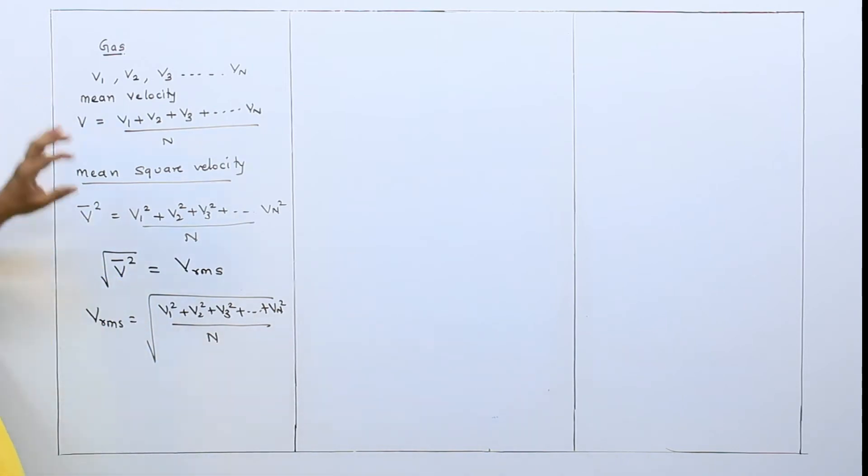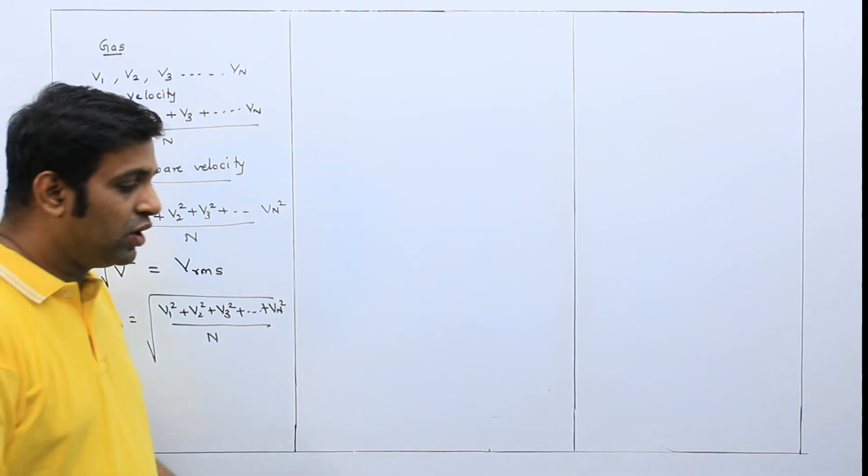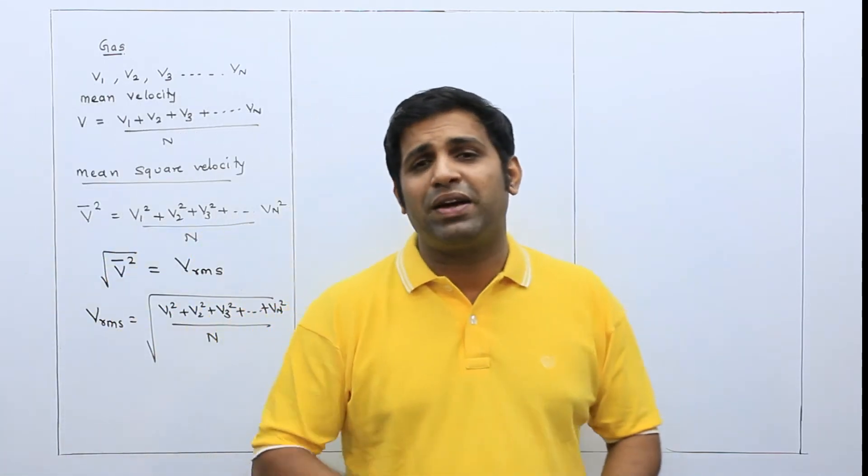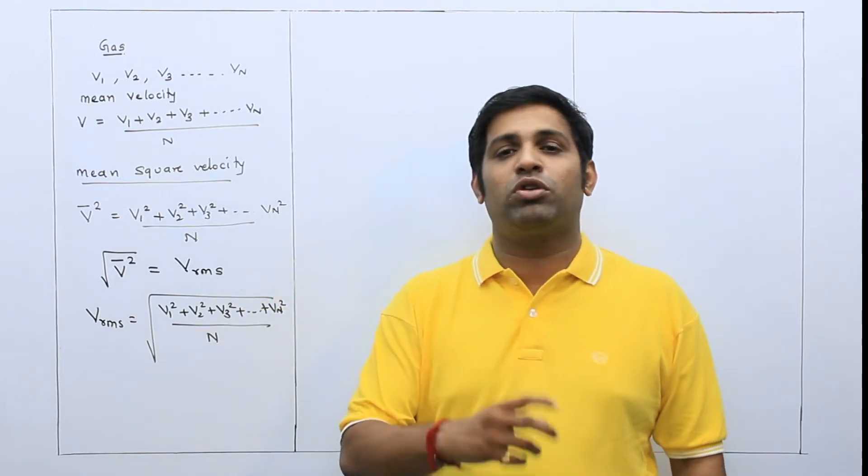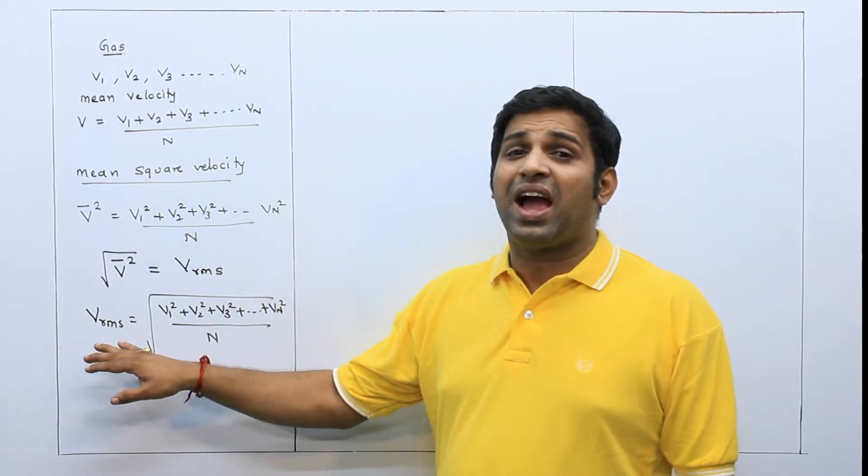So this is mean velocity, this is mean square velocity and this is RMS velocity. Basically, when I talk about gas molecules of average, I talk about gas molecules of speed, then I talk about RMS square.